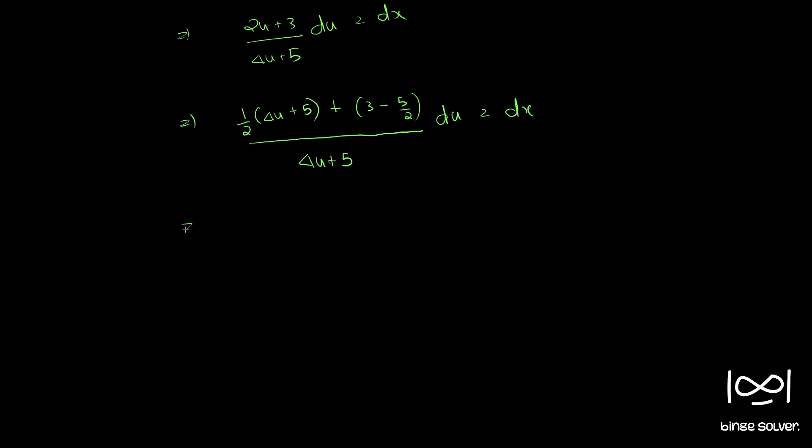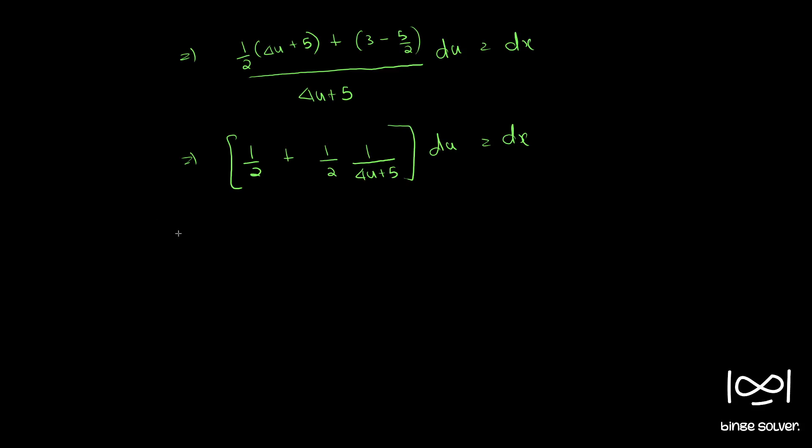So we have opening up, we have 1 by 2, 4u plus 5 cancels out. Now plus 3 into 2 is 6 minus 5 is 1 by 2. So 1 by 2 plus 1 by 2 into 1 by 4u plus 5 du equal to dx. Now we can integrate: integral 1 by 2 du plus 1 by 2 into integral 1 by 4u plus 5 du equal to integral dx plus c.